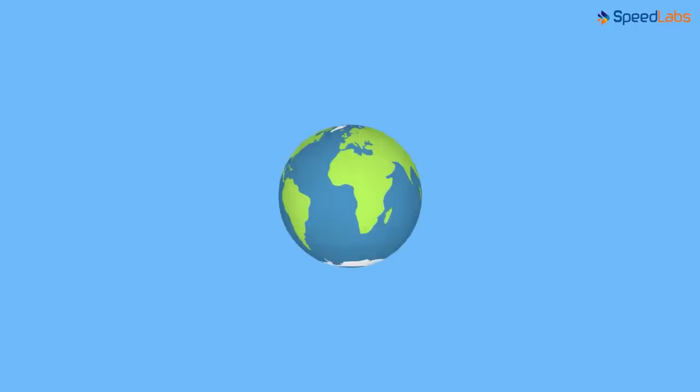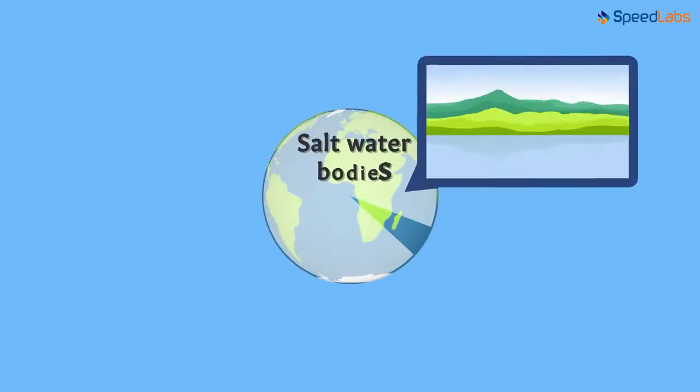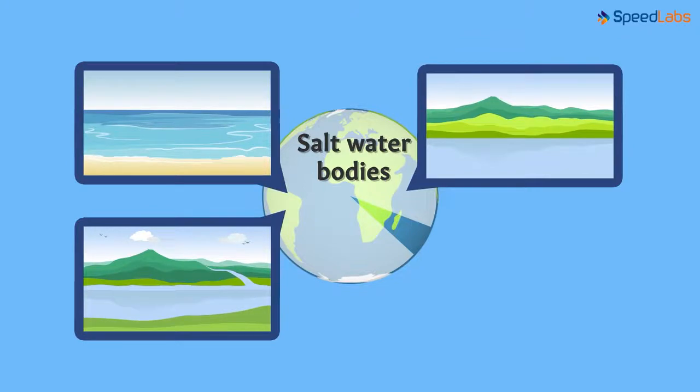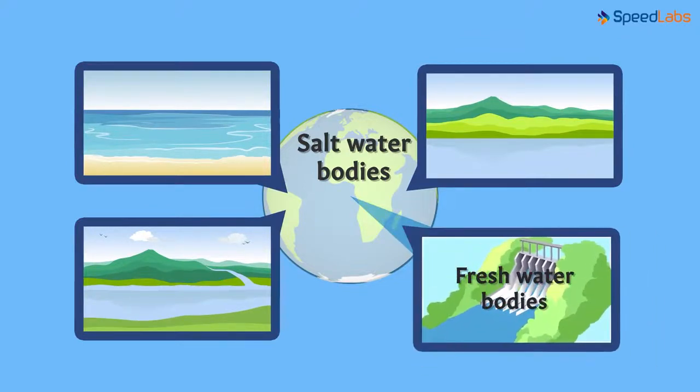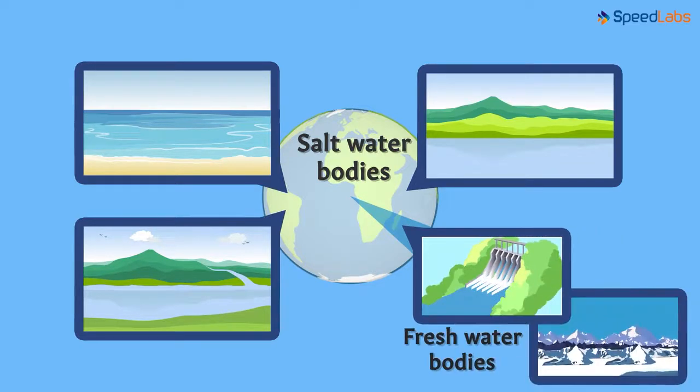The major portion of the earth is covered with salt water bodies like oceans and seas. Only some amount of fresh water is available for human use. Out of all the fresh water available, most of it is locked in the form of glaciers and ice.